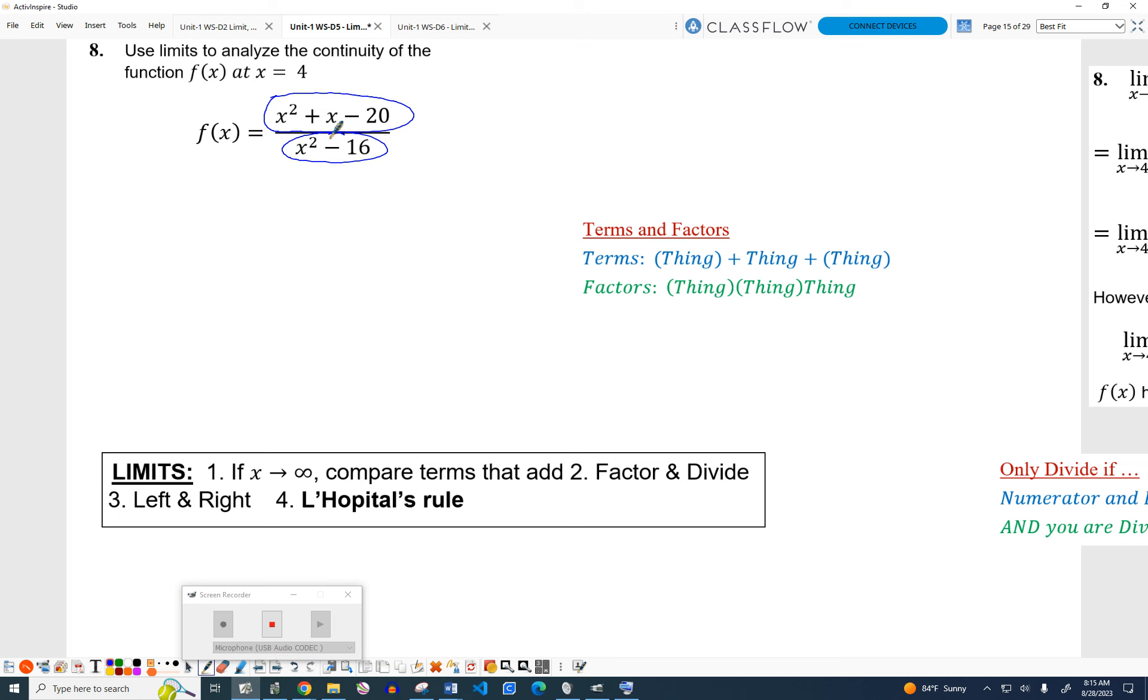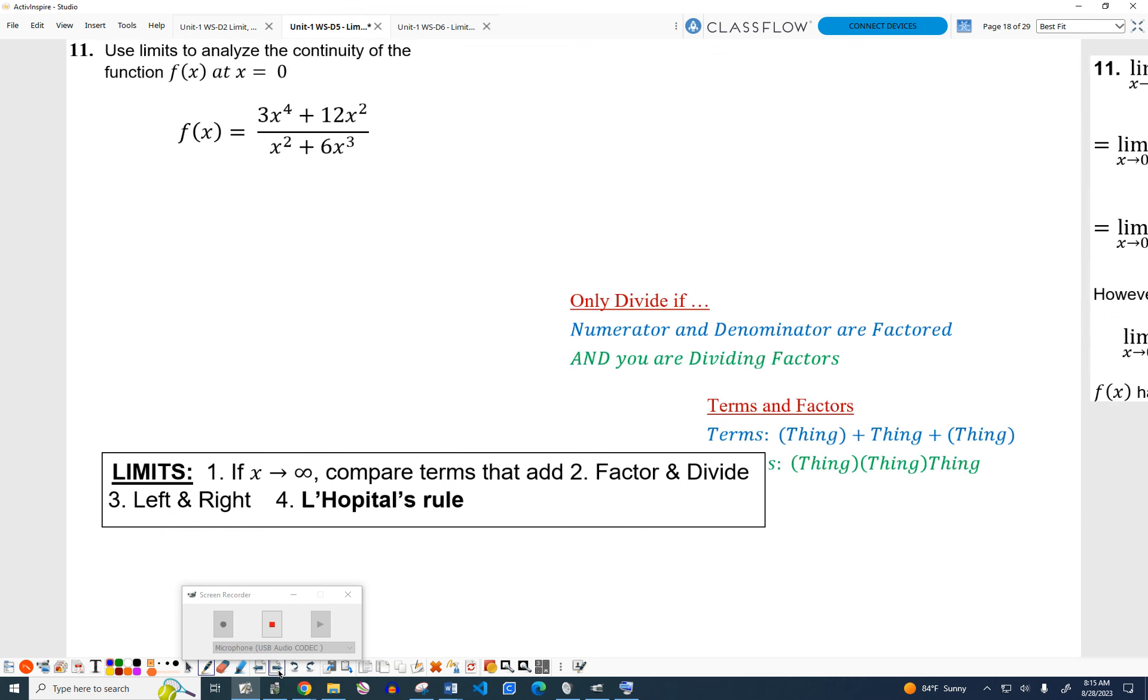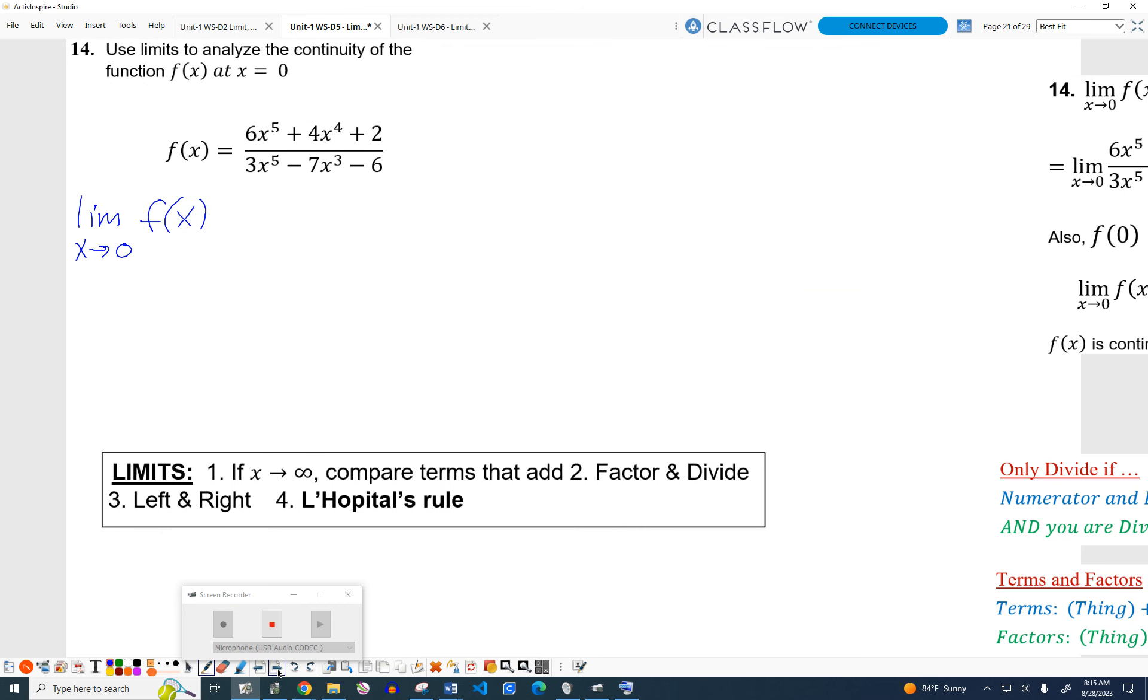But on the one we're working, number 14, the complexity is too much, like 6x to the fifth, and I can't pull out an x because there's no x with that term. Similar on the bottom, there's no x with the six. So I'm not going to spend a lot of time trying to factor. Step two here is factor and divide if you can. It doesn't mean you can.